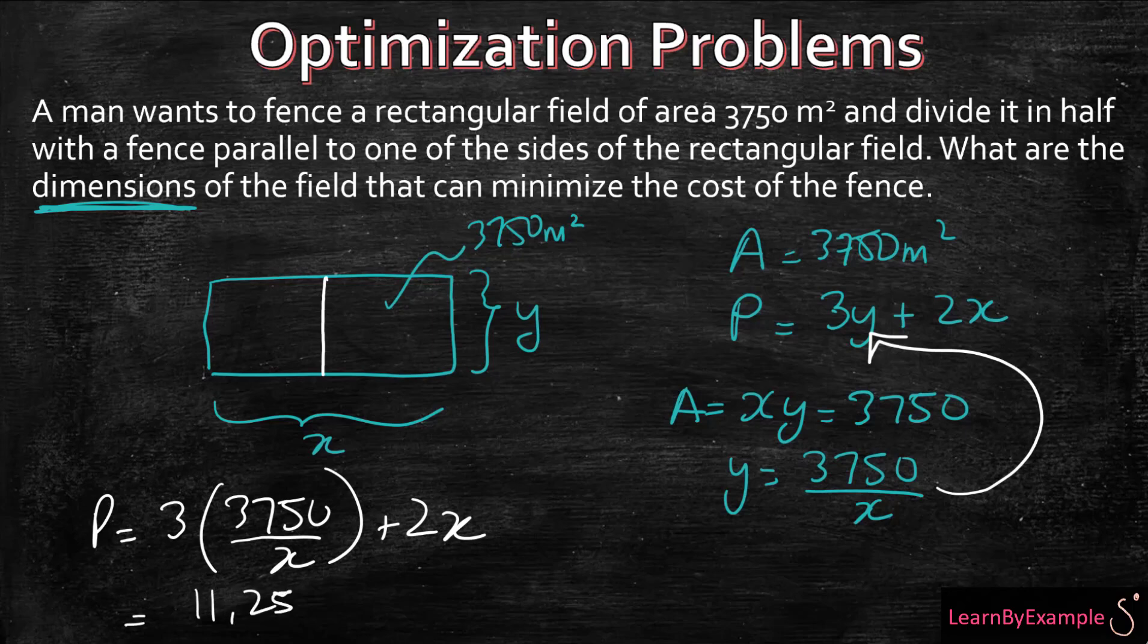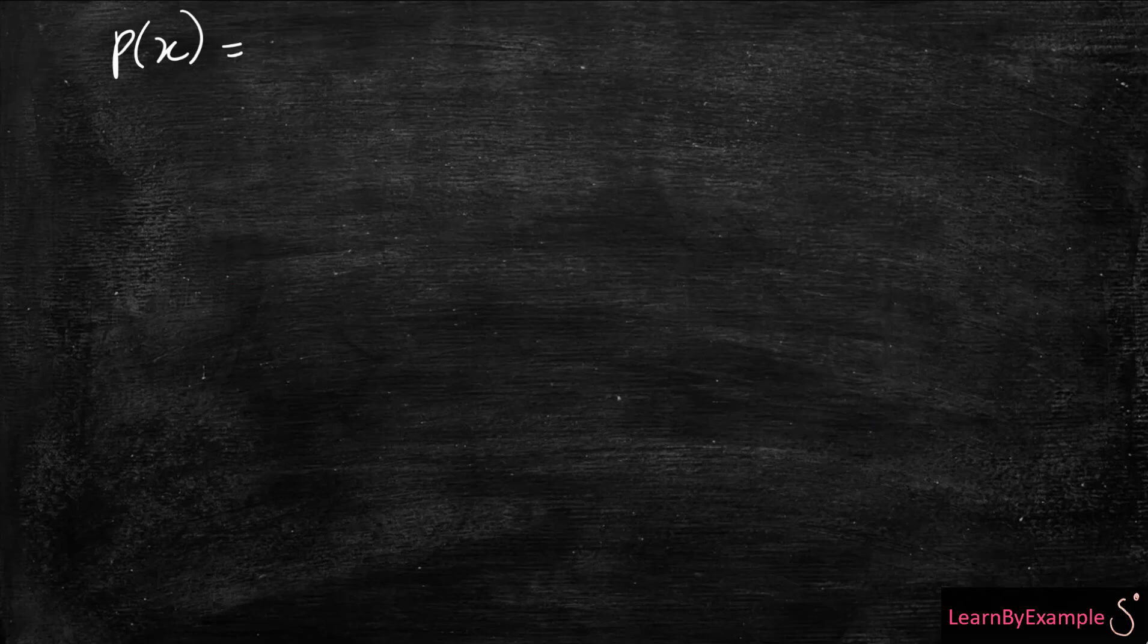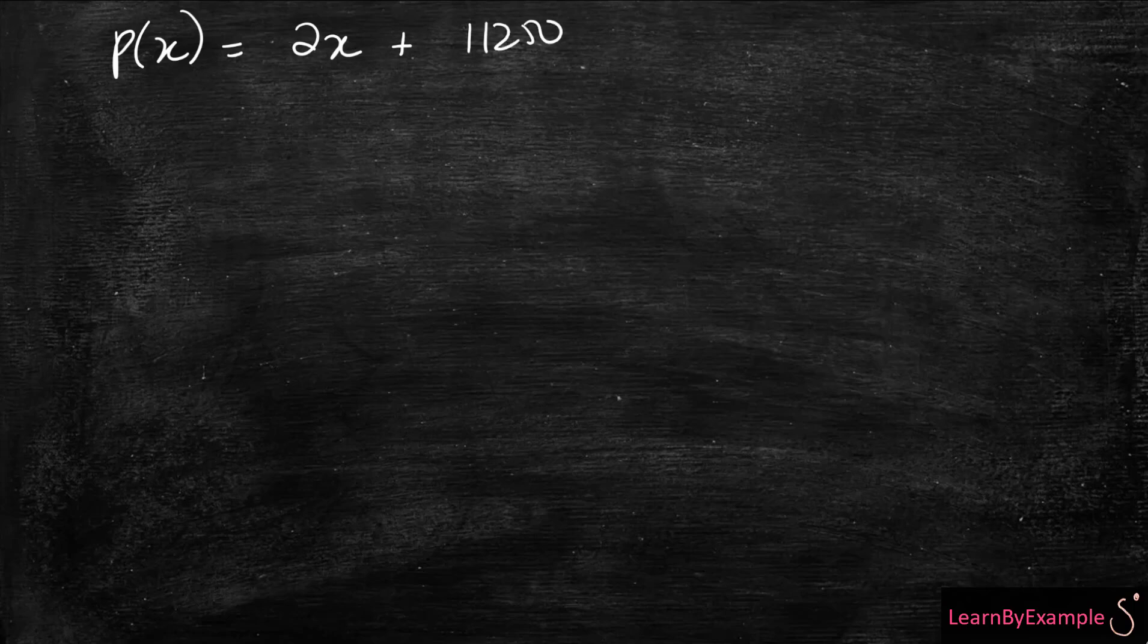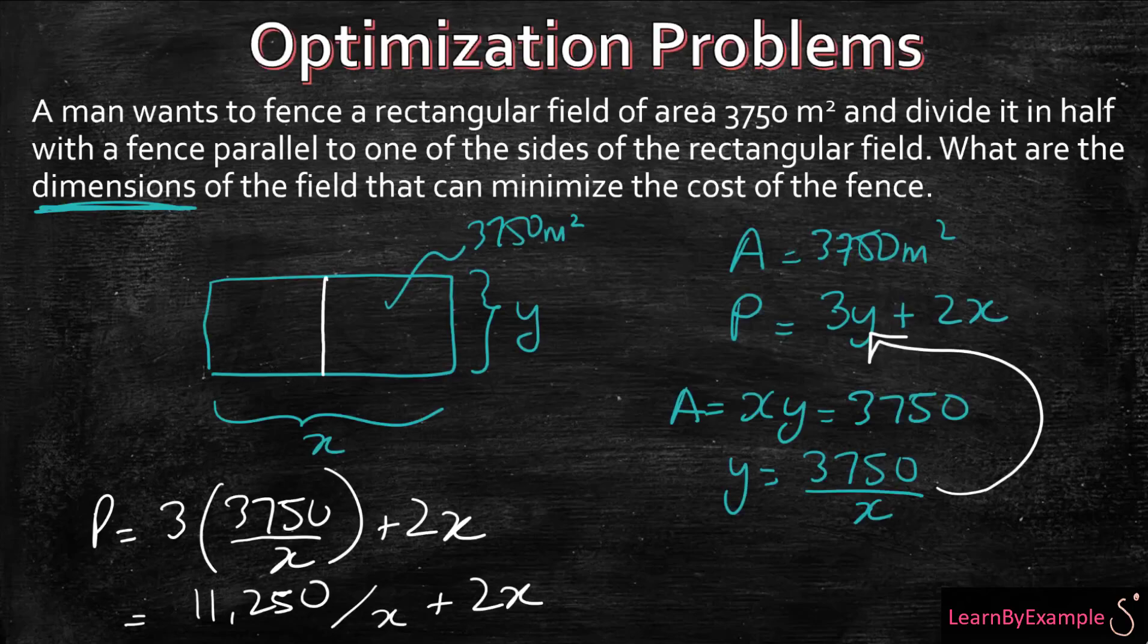That's 11,250 over X plus 2X. Let's continue that solution altogether. The perimeter, let's reorganize this, is equal to 2X plus 11,250X^(-1). Now we have to take the derivative so that we can find what the minimum dimensions are.